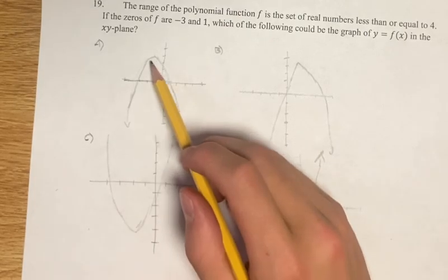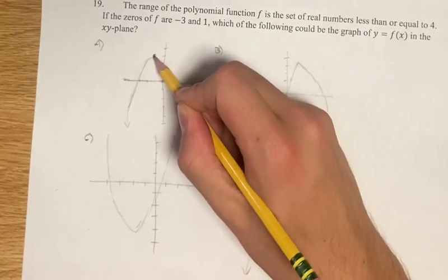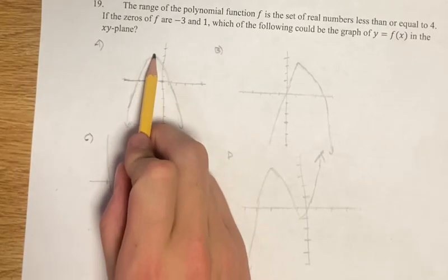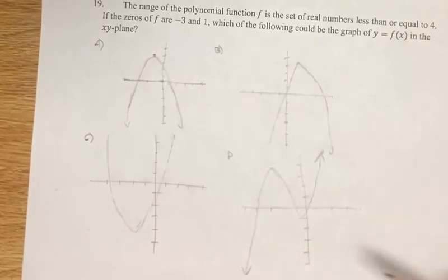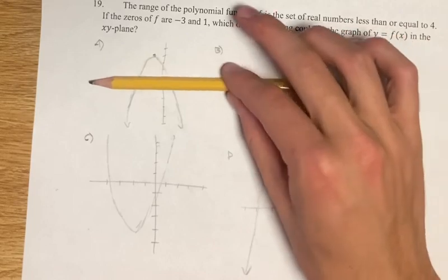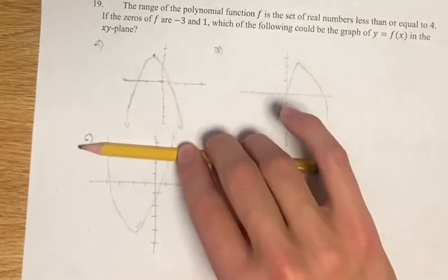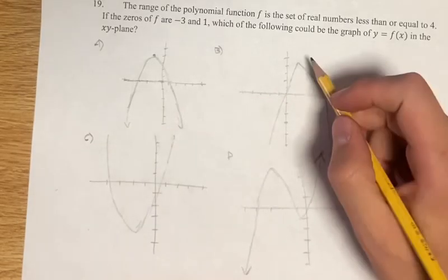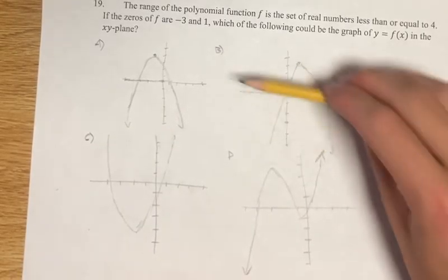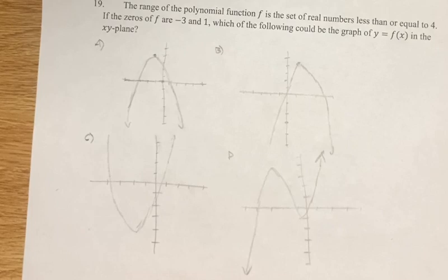And if we see, a has a maximum right here, and it is equal to y equals 4. So all of our y values for f in this graph are less than or equal to 4. Same thing here. That is our maximum value. Everything else is either less than or equal to it.